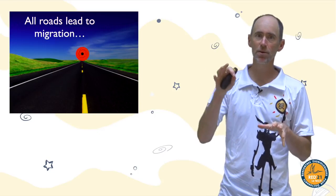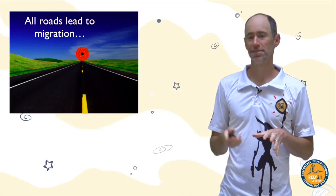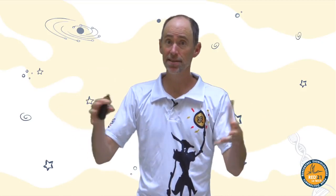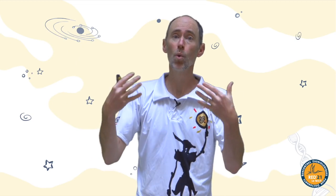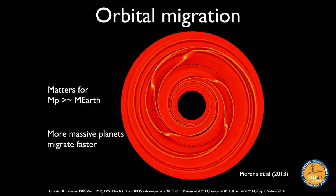Regardless of exactly where planets form, all roads lead to migration. The timescales are such that things grow fast — much faster than the time for gas to dissipate — so there must be a window where large planets interact with the gaseous disk. When they do, they launch spiral density waves in the disk, and those density waves torque the planet's orbit causing it to shrink or grow. For close-in planets, orbits mostly shrink. More massive things migrate somewhat faster.